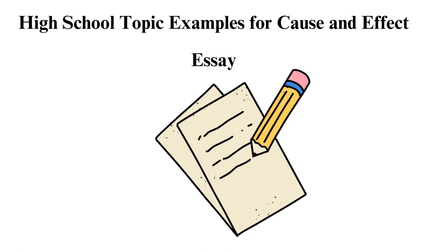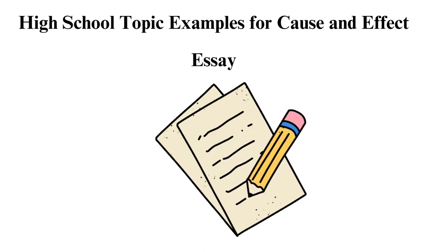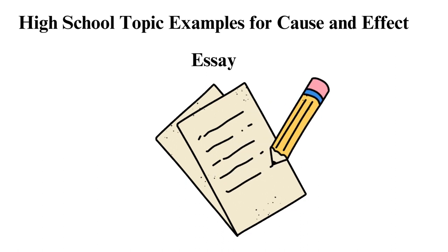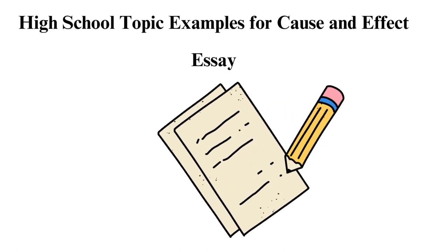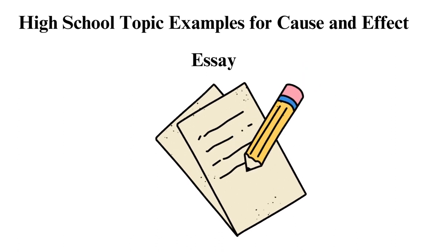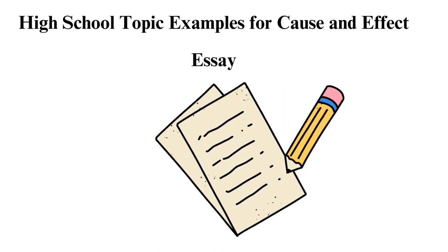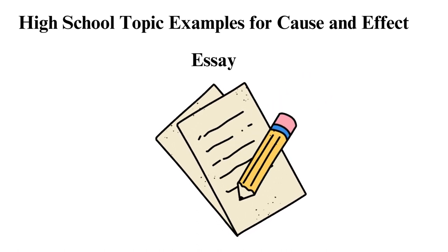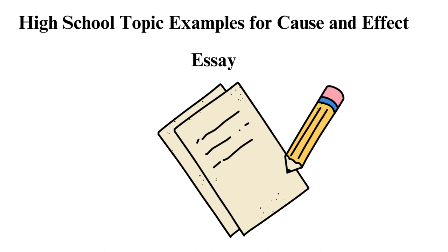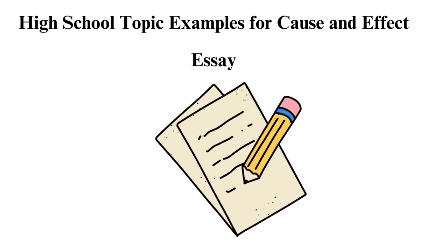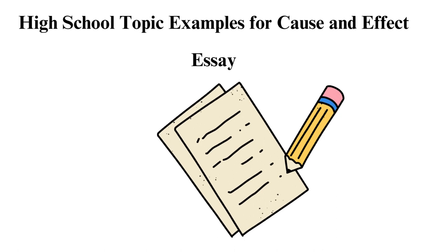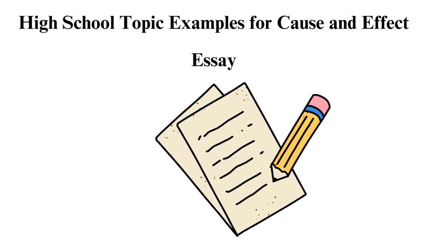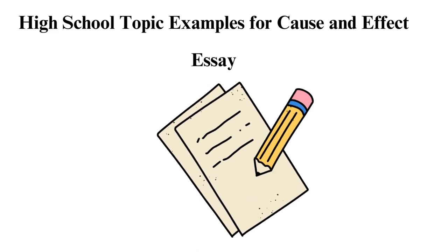High School Topic Examples for Cause and Effect Essay: 1. How are high school learners reacting to online learning? 2. Strategies for preventing peer pressure. 3. High school's shooting trend. 4. Importance of sports in high schools. 5. Why is sex education a controversial topic? 6. What are the benefits and dangers of social media to young students? 7. Impacts of parent involvement in a child's education. 8. Is gaming good for children? 9. Should high school students wear school uniforms? 10. Charter schools' effect on the education sector.